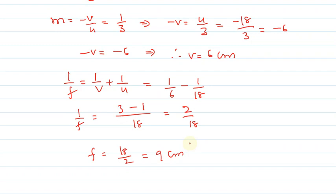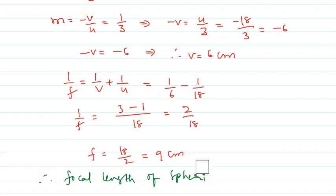The focal length is positive, which confirms this is a convex mirror, as focal length is measured along the direction of light rays. Therefore, the focal length of the spherical mirror is nine centimeters and it is a convex mirror. I hope you have understood the explanation, thank you.